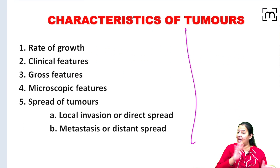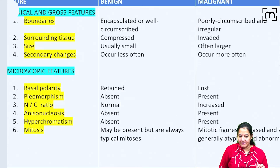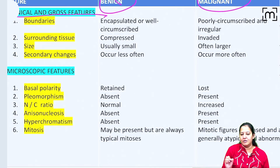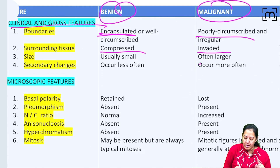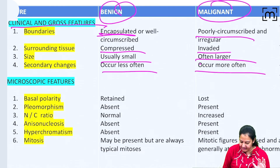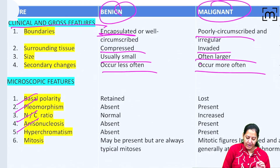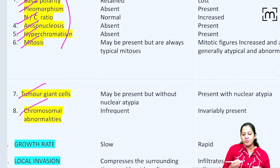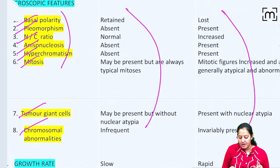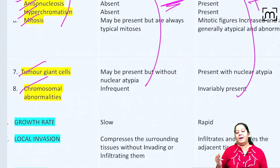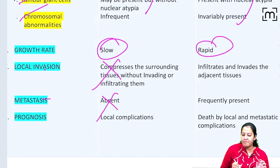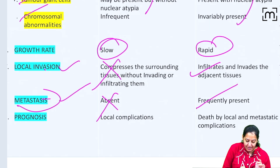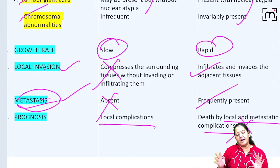Looking at the summary difference table: benign tumours are encapsulated, compress surrounding tissue, are small, and lack secondary changes; malignant tumours are poorly circumscribed, invade surrounding tissue, are large, and have secondary changes. All anaplastic features are absent in benign and present in malignant. Benign tumours are slow growing with no local invasion or metastasis; malignant are rapid growing with both local invasion and metastasis. Prognosis is worse for malignant due to local and metastatic complications.